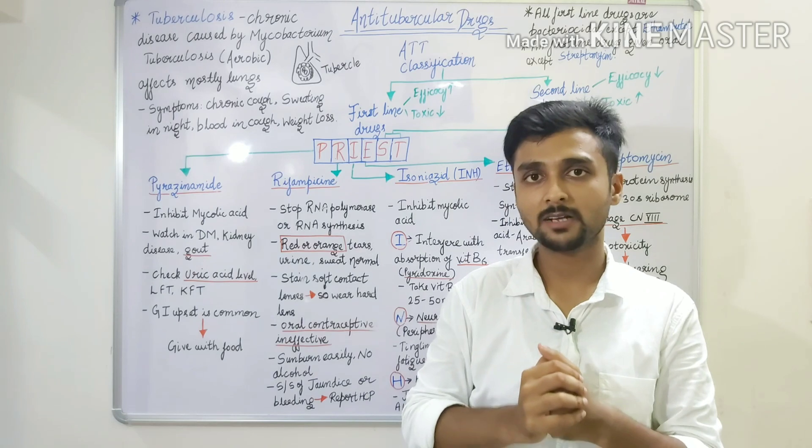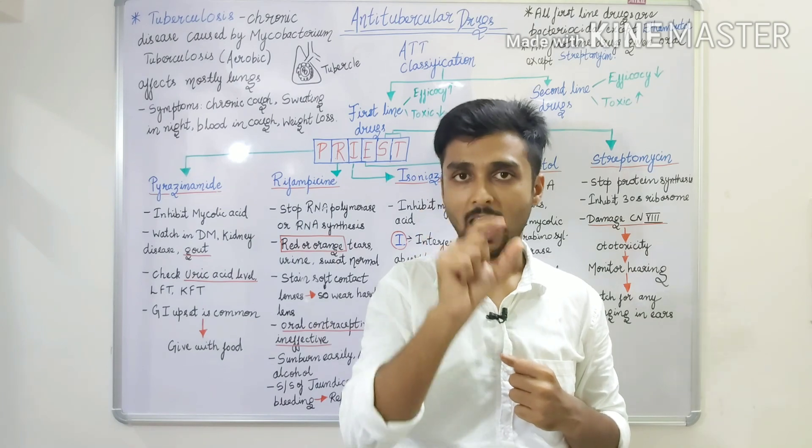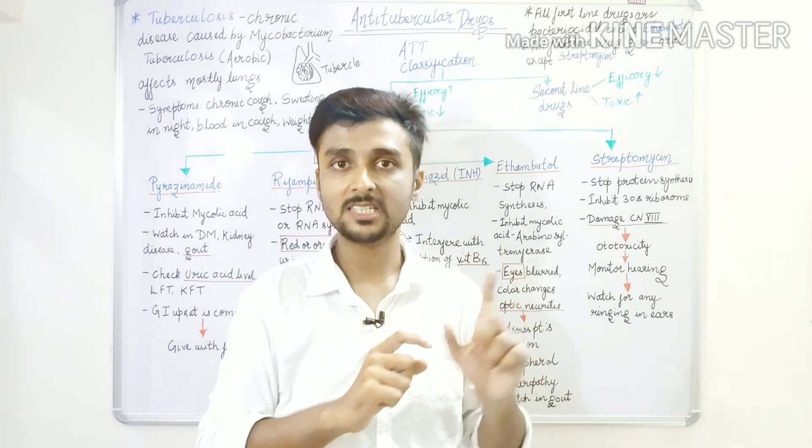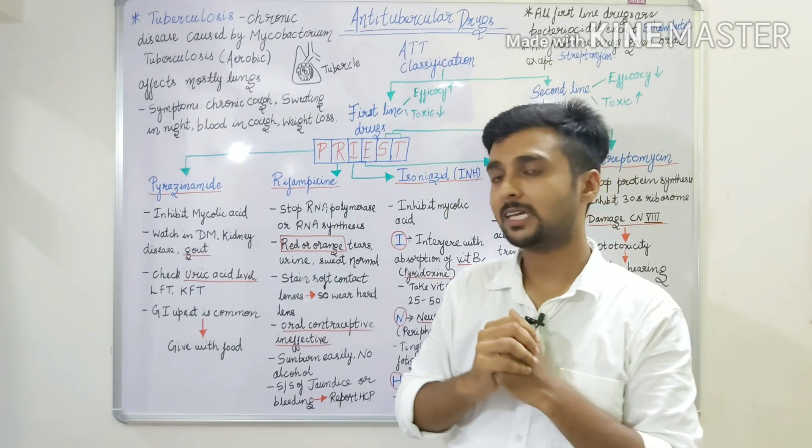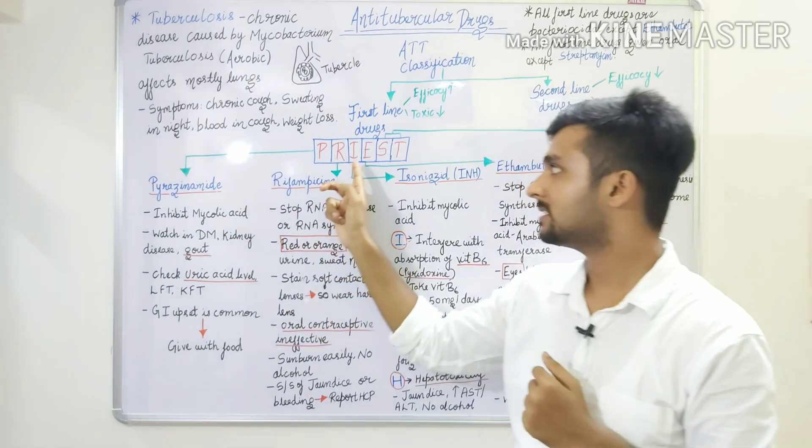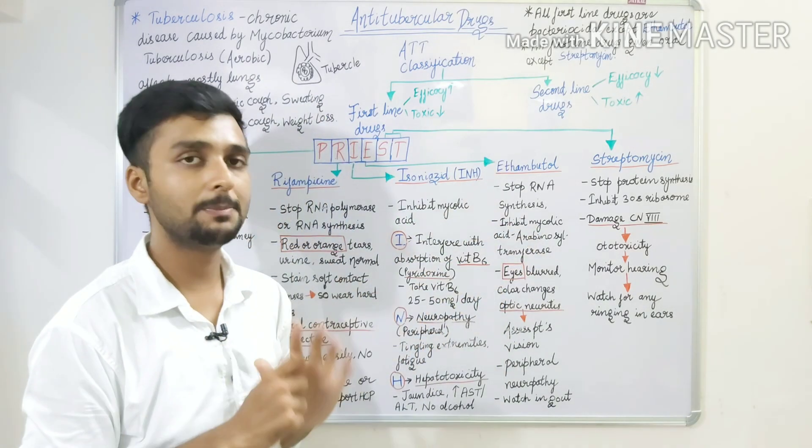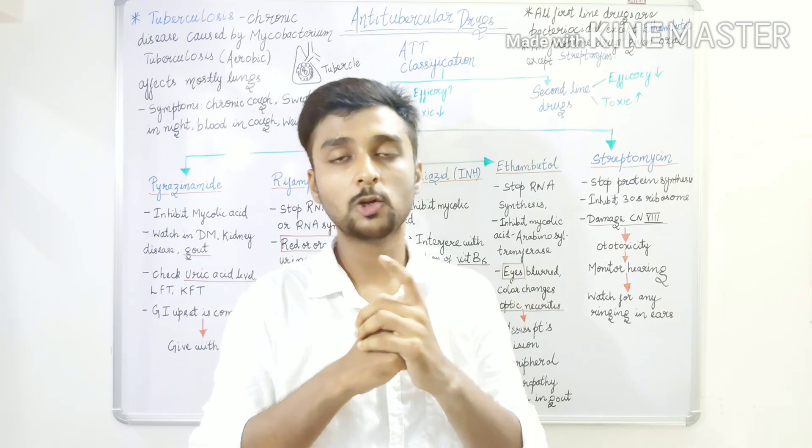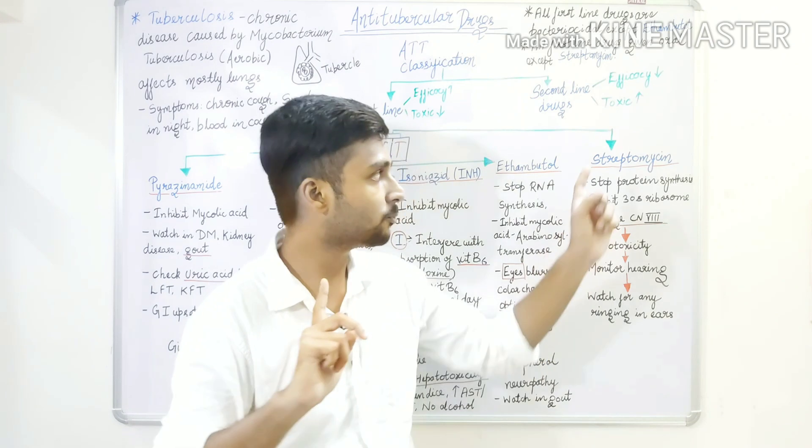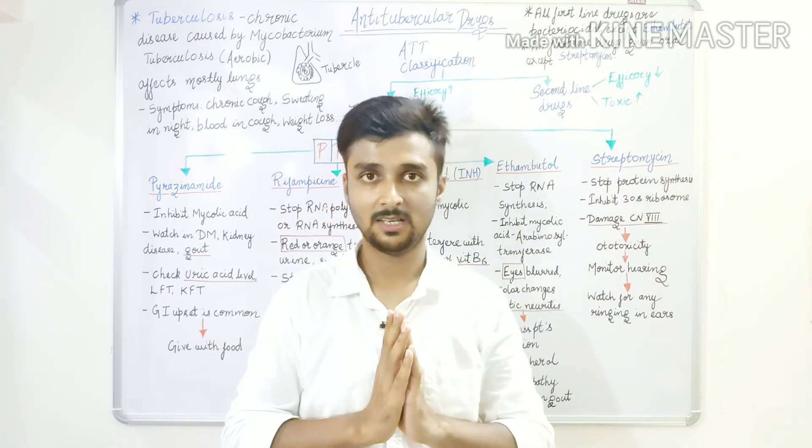In a short trick, how do we remember the first-line drugs? PRIEST. P for Pyrazinamide, R for Rifampicin, I for Isoniazid, E for Ethambutol, and ST for Streptomycin. For mechanism of action, we should remember PIE. P Pyrazinamide inhibits mycolic acid, I Isoniazid inhibits mycolic acid, E Ethambutol inhibits mycolic acid. If we start with R, then R for RNA synthesis stops. And in Streptomycin, PT, so it stops protein synthesis.